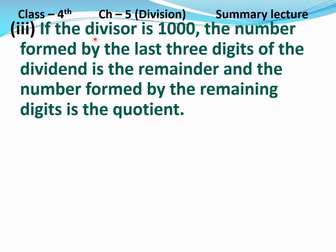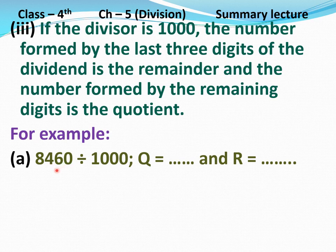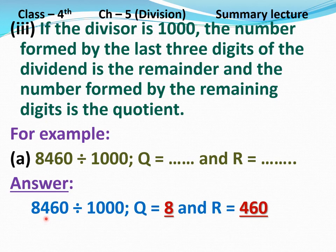Third: if the divisor is 1000, the number formed by the last three digits of the dividend is the remainder and the number formed by the remaining digits is the quotient. For example, part A: 8460 divided by 1000. Divisor is 1000, so the last three digits, 4, 6, and 0, form 460, which will be the remainder. The remaining digit, 8, will be the quotient. Answer: 8460 divided by 1000 — quotient equals 8 and remainder equals 460. Clear?